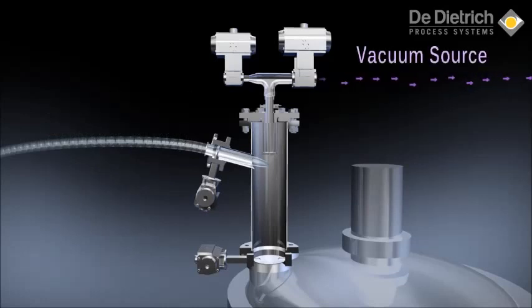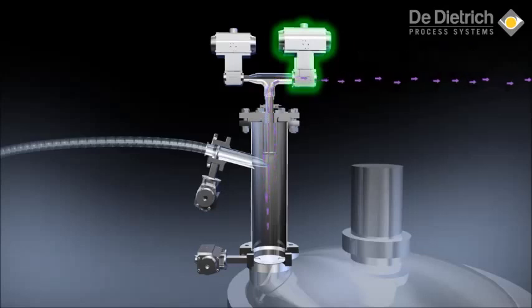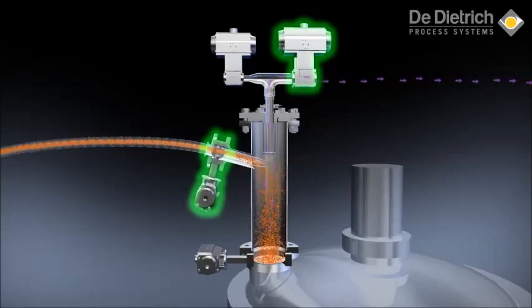With the vacuum source in operation, the vacuum isolation valve opens to remove oxygenated or solvent-laden air from the powder pump body. After a predetermined time, the powder inlet valve opens and solids are drawn into the body.